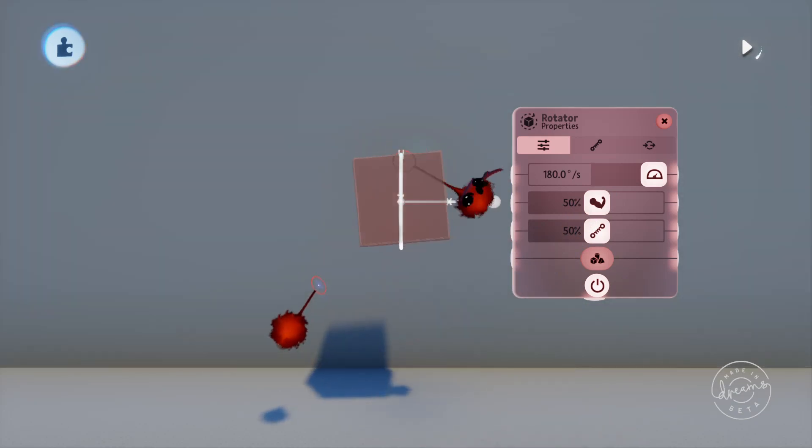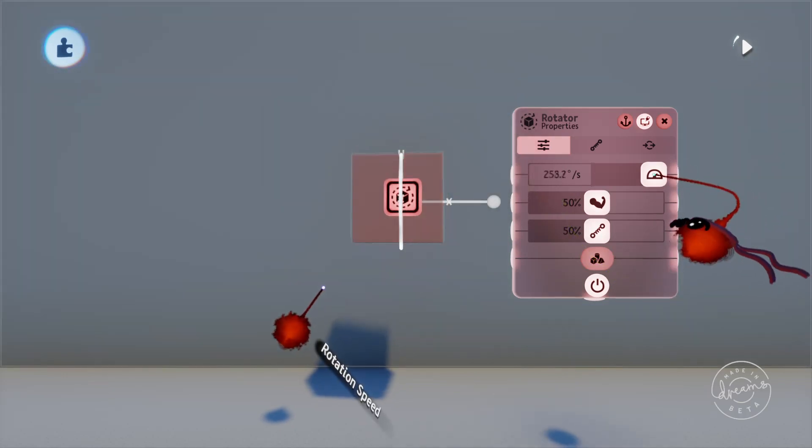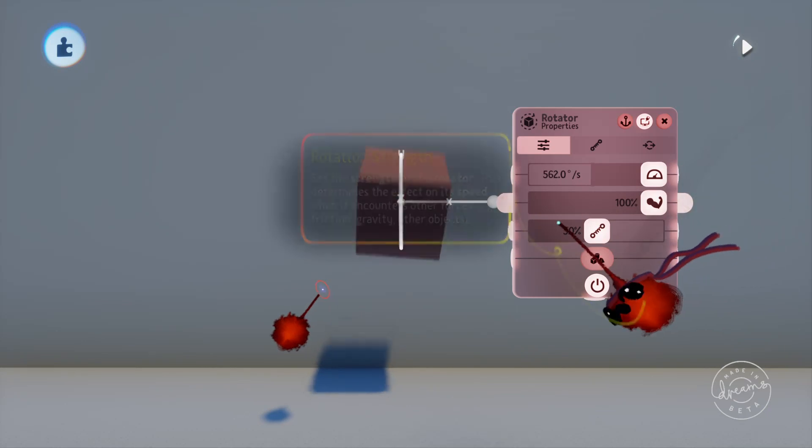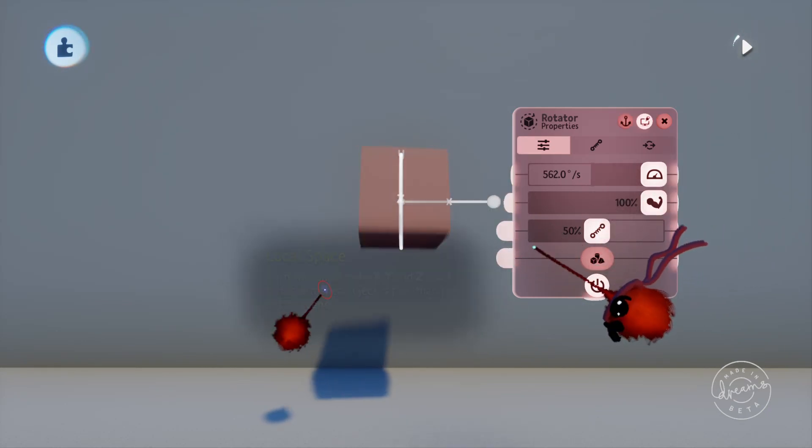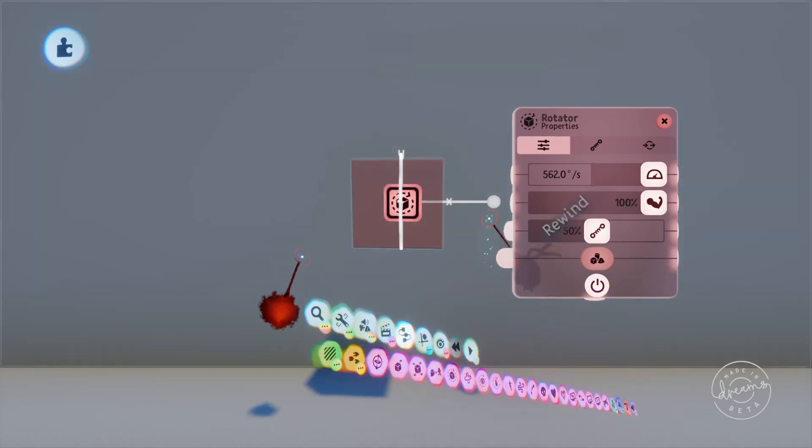On the tweak menu up the top we've got the rotation speed. Then under this we've got the rotation strength which will increase or decrease the rotator's ability to rotate the mass of the object. We can change the rotation direction by dragging the bar on the right.